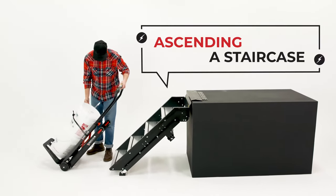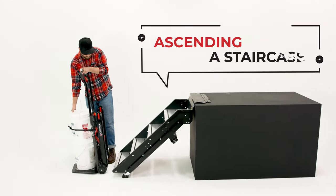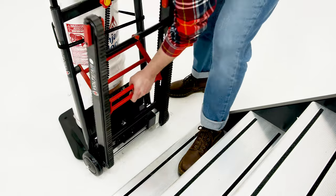Stop a few inches from the bottom stair and extend the tracks by rotating the red track bars forward and then pulling up and out.